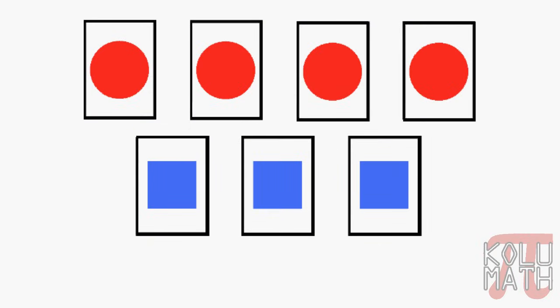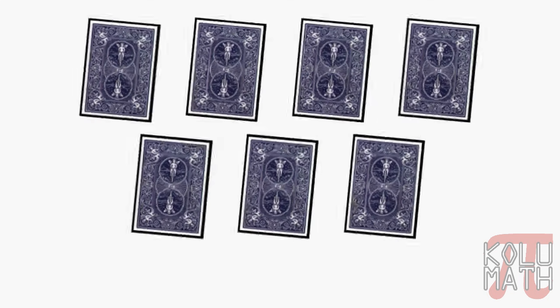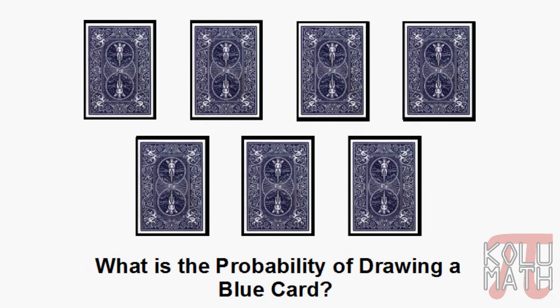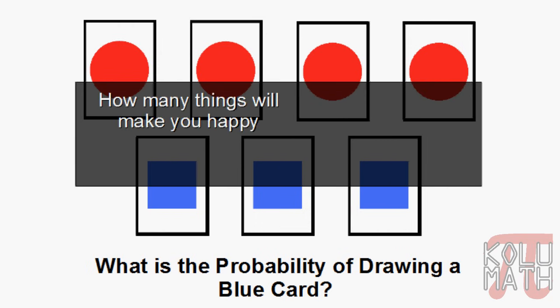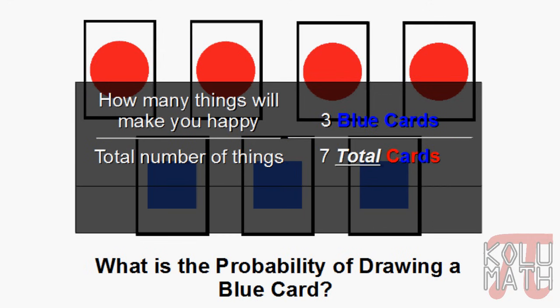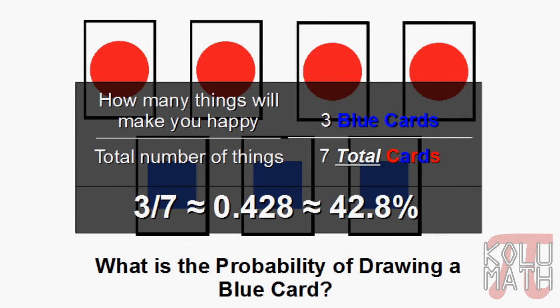Let's take a look at another example. We've got some cards here — some are red circles and some are blue squares. We're going to shuffle them up and we want to know: what's the probability of drawing a blue card? Using our tool — how many things will make you happy over how many things you have total — we're looking for three blue cards out of a total of seven cards. We can make that into a fraction: we get about 0.428 or 42.8%.